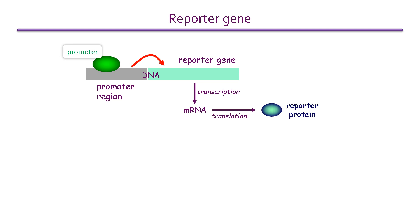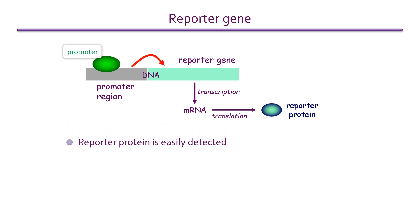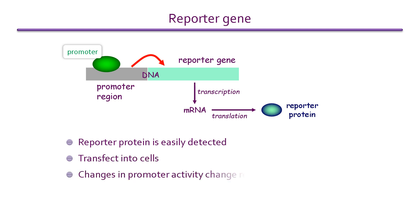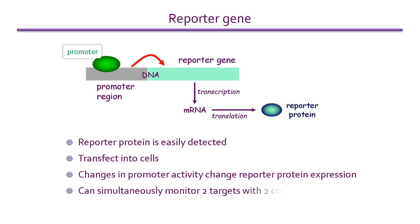These assays are widely used because the reporter can be easily detected, it is easy to transfect the DNA into cells, and the change in expression of the reporter protein is a direct measure of the activity of the promoter. In addition, two reporter genes can be employed simultaneously, provided that they can be separately detected.